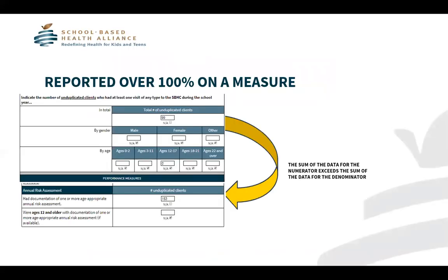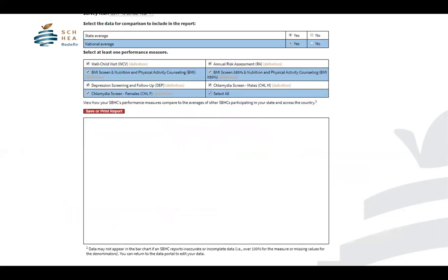The fourth common error we see in an SBHC's report is when they report over 100% on a measure. As you can see in this example for the risk assessment, this SBHC reported that 153 clients had a risk assessment. However, they only reported seeing 99 clients during the 2017-18 school year. This forces the calculation above 100%, and therefore the report will be blank when you log in to see it.